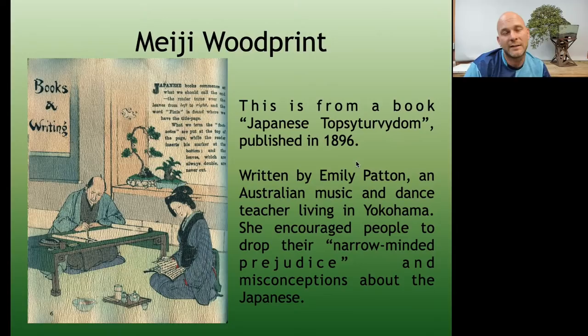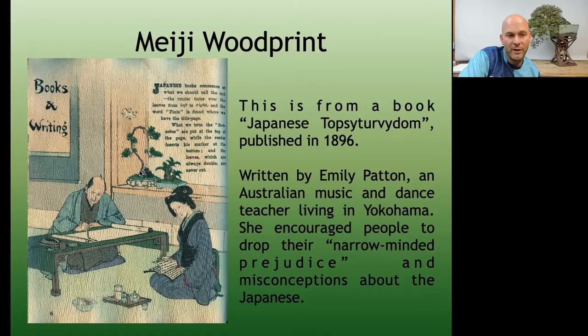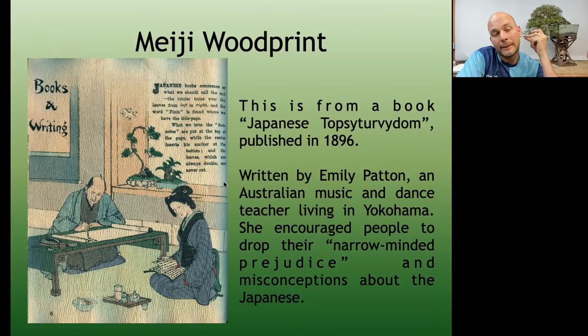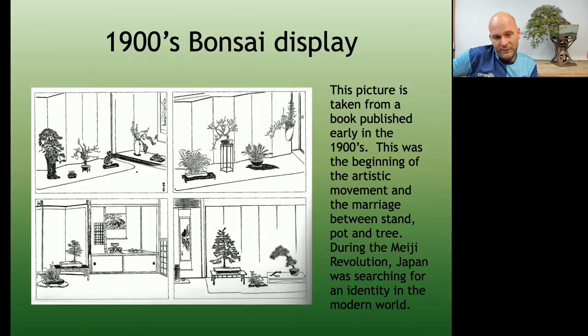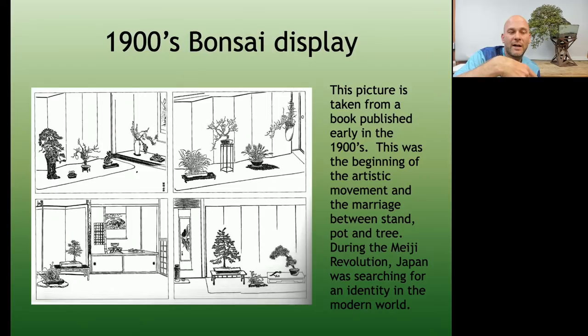This is a picture from a book in 1896 called 'Japanese Topsy-Turvydom,' an interesting book written by an Australian music and dance teacher who talks about all these different areas of Japanese culture. Here we see some trees and sago palms being displayed in the tokonoma. These pictures are also in a book by the Nippon Bonsai Association, published in the early 1900s — really the beginning of the artistic movement where we start to see trees placed on stands and displayed in artistic ways.